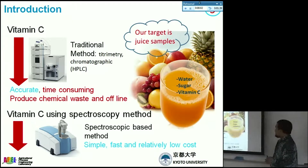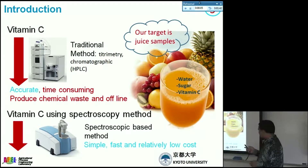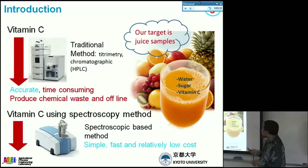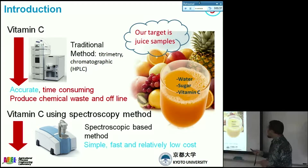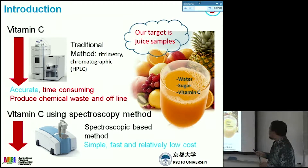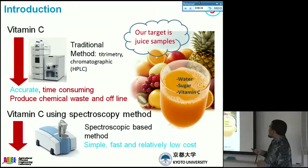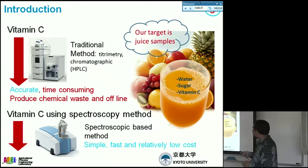Vitamin C is one of the main components of fruits, both in fresh and processed juice. To measure the concentration of vitamin C, we usually use wet chemical methods, including titrimetry and HPLC methods. Each method has its limitations. For example, using titrimetry has several disadvantages such as using hazardous reagents, needing standard solutions, and producing chemical waste.